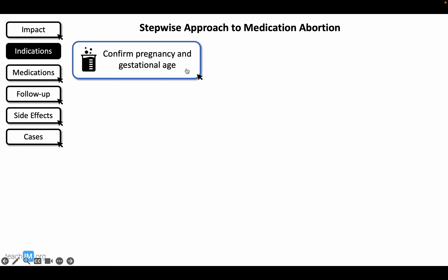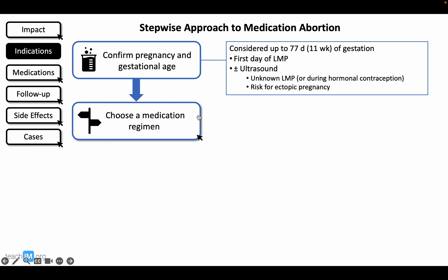Step one is to confirm pregnancy with a urine HCG and calculate gestational age based on last menstrual period. Ultrasound is not needed except where the last period is unknown or if we suspect ectopic pregnancy. The key is that we want to make sure they're less than 11 weeks gestation.